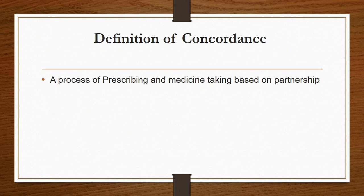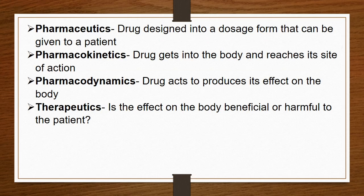There are some definitions you have to know. One is the definition of concordance — it's a process of prescribing and medicine taking based on a partnership. What is pharmaceutics? It's the drug designed into a dosage form that can be given to a patient. What is pharmacokinetics? It's the drug that gets into the body and reaches the site of action. What is pharmacodynamics? It's the drug that acts to produce its effect on the body. What is therapeutics? It's the effect on the body, beneficial or harmful, to the patient.